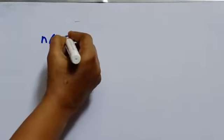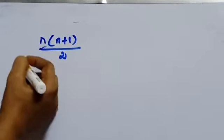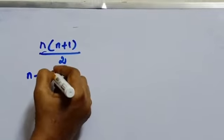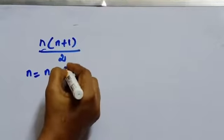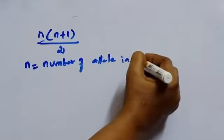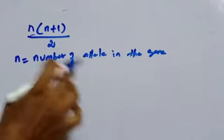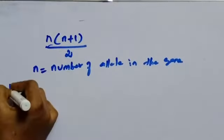In a multiple allele, to find out the possible genotype, we can use the formula N(N+1) divided by 2. What is N? N is the number of alleles in the gene. How many alleles in blood group? You can take example. Blood group.